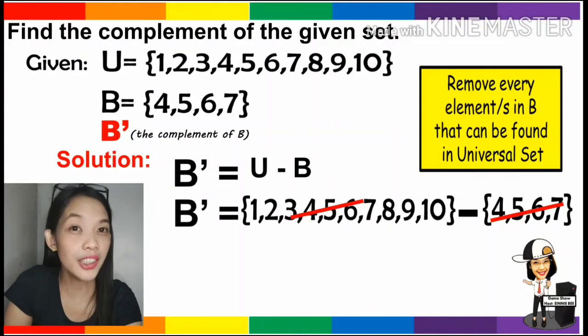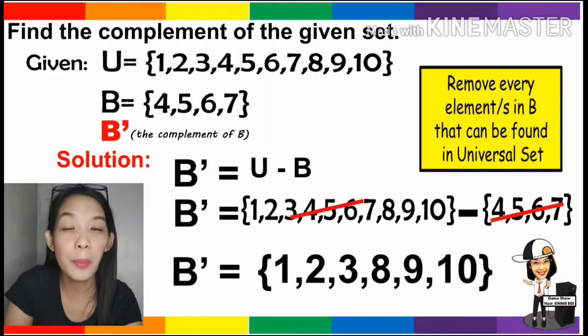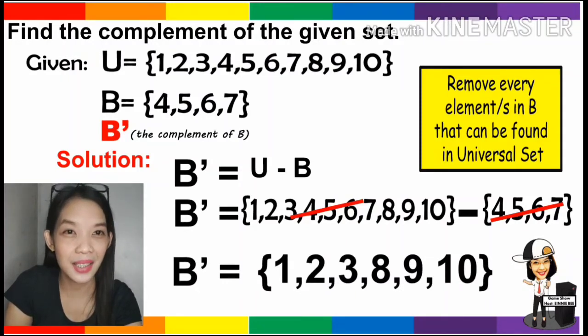Now what are the elements left? That's correct. The complement of B will be 1, 2, 3, 8, 9, and 10.